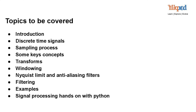Sampling Process: Explaining the process of converting continuous time signals into discrete time signals through sampling. Key Concepts: This segment will introduce fundamental concepts in signal processing, including the Dirac delta function, convolution, and the mathematics behind it.